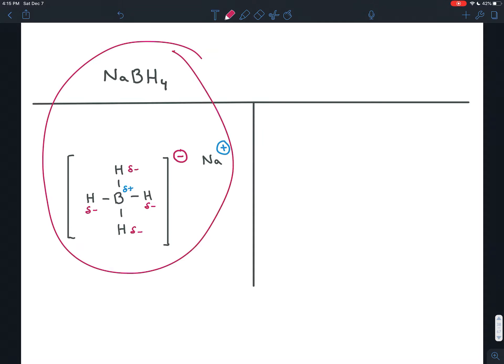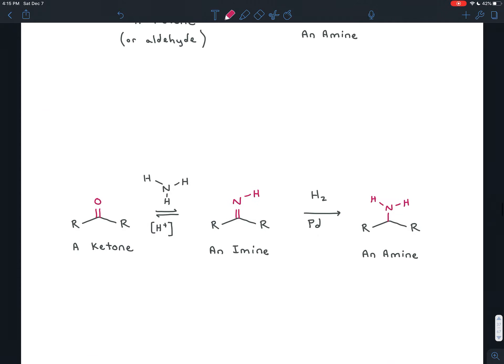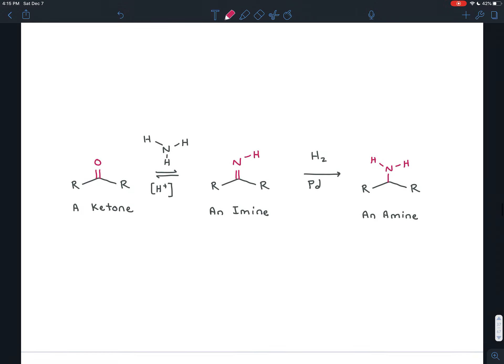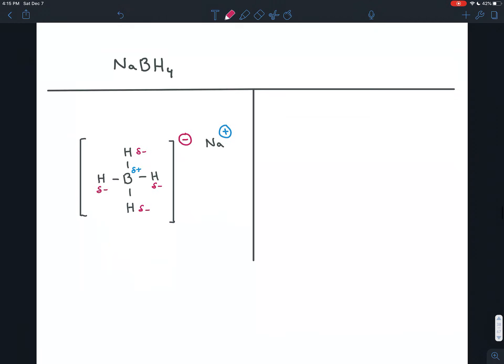The reason why we can't just use sodium borohydride by itself, which we're used to and which we're comfortable with, is because this hydrogen nucleophile is a strong enough hydrogen nucleophile to attack not just the imine, to turn it into an amine, but to attack the ketone, and it would turn it into an alcohol. So that would create a mess out of our products, and we don't want that.